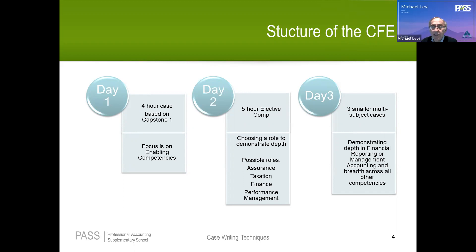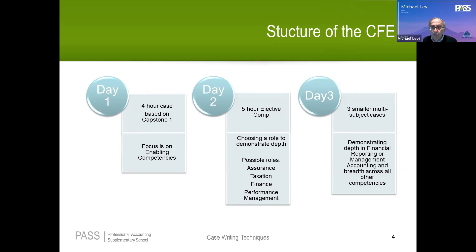Day Three, instead of writing one big five-hour case, you'll be writing three smaller cases, anywhere from 70 to 90 minutes each, and the three cases in total will add up to 240 minutes. So Day One is four hours — one big case. Day Two is five hours — one big case. Day Three is four hours — three cases adding up to 240 minutes, with the shortest case typically 70 minutes and the longest 90. That is the basic structure of the CFE.